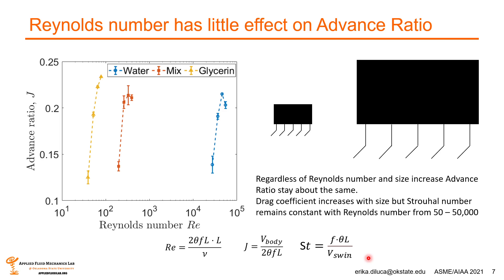We found that Strouhal number was essentially unchanged across Reynolds numbers from 50 to 50,000. This suggests that momentum transfer to the fluid is not affected by changing the size or velocity scale of the metachronal paddle system by four orders of magnitude. Therefore, when you change model size, Strouhal number remains constant, and changes in drag coefficient have negligible effects on the model.